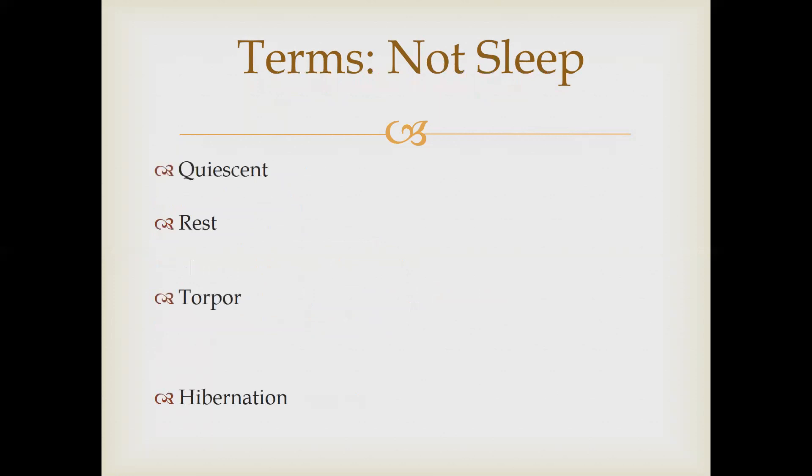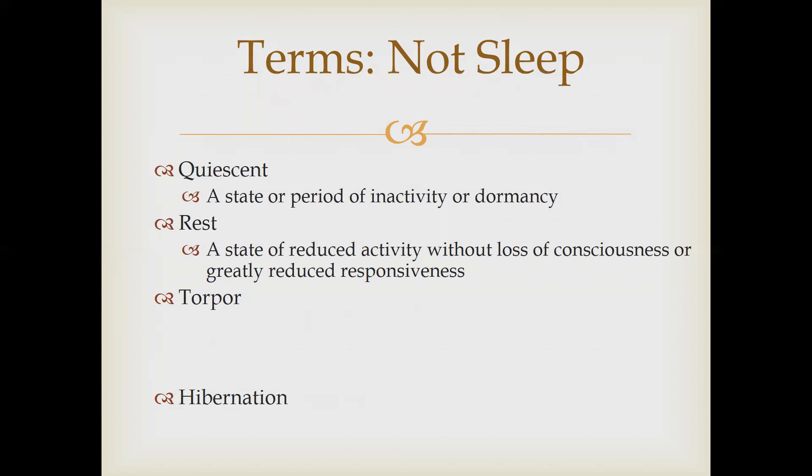There are terms that are not considered sleep that a lot of people confuse. Quiescent is essentially inactivity or dormancy — the animal has shut down for a period of time, it's dormant, it's in a quiet mode. Rest is reduced activity with no loss of consciousness; the animal is not very responsive but it's not asleep. We do see sleep as a less-responsive state, but the animal is still able to respond — just not as responsive as when it's alert.